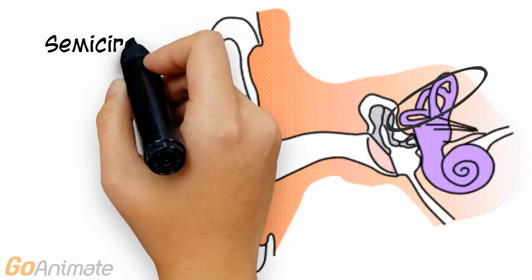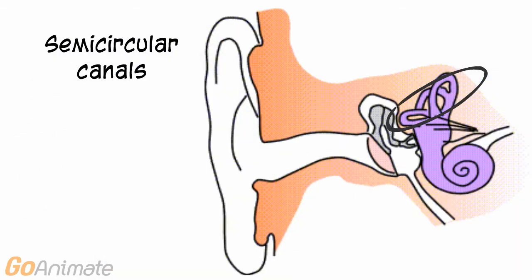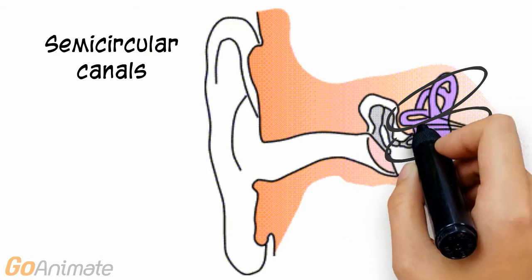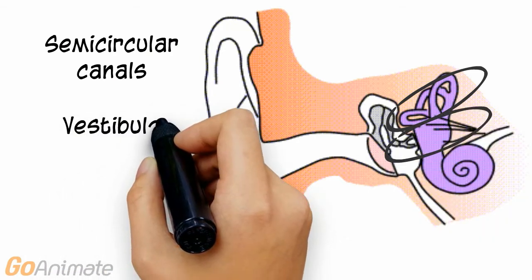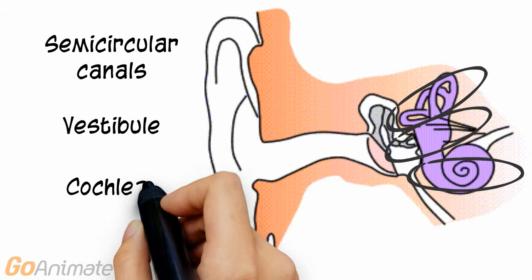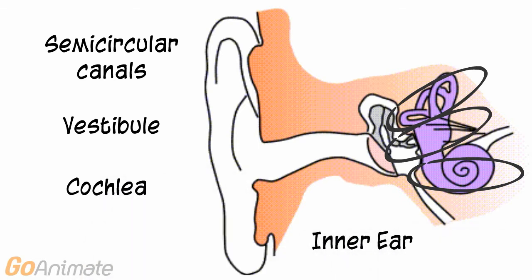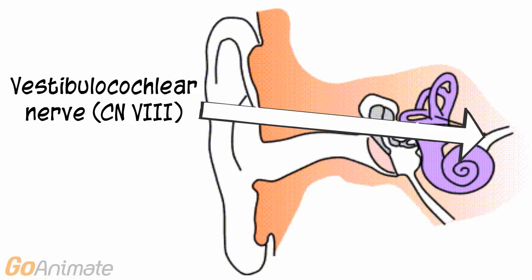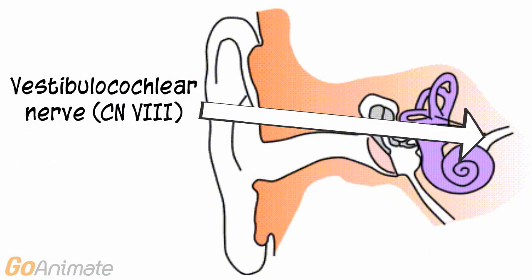The inner ear consists of three main parts: the semicircular canals, the vestibule, and the cochlea. The auditory or vestibulocochlear nerve, cranial nerve 8, carries the information from the inner ear to the brain for processing.